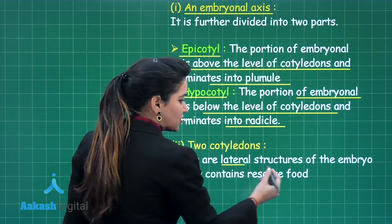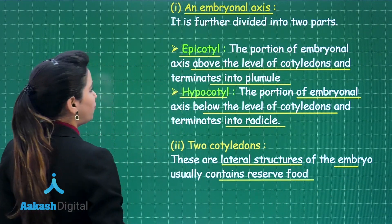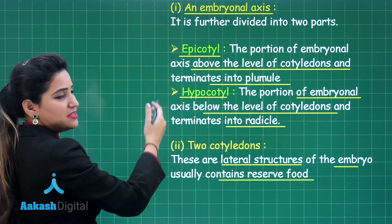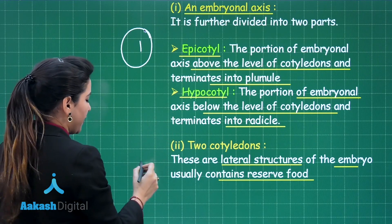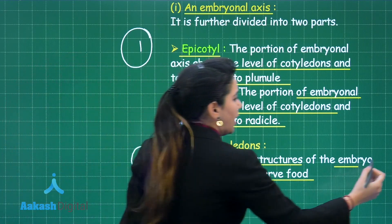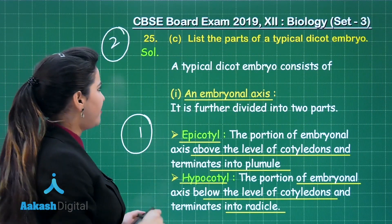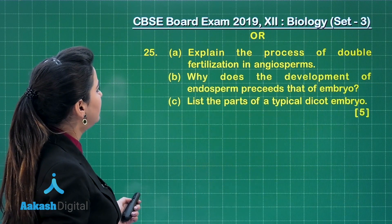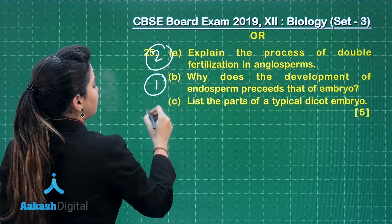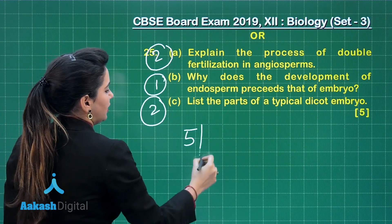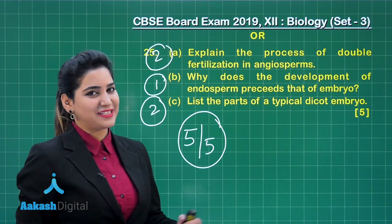The cotyledons are lateral structures of the embryo that usually contain reserve food. For writing correctly the embryonal axis you will get one mark, and for writing two cotyledons as the other part of the dicot embryo you get another one mark. In totality, two marks for part C, one mark for part B, and two marks for part A — five out of five marks. Let us take up the next question.